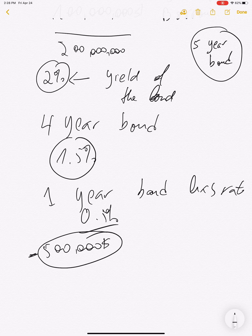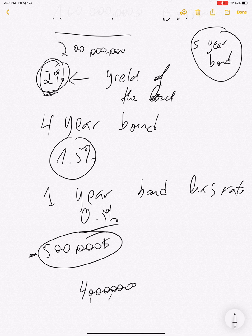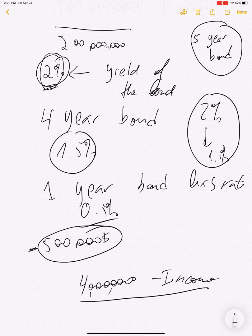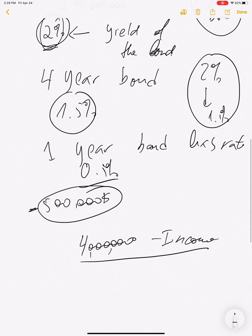On the income side, you have 2% on the five-year bond with $200 million invested, giving you $4 million of income. But also — and this is very important — you have the roll-down benefit: you go from 2% to 1.5%, assuming the curve doesn't change, which is a big assumption.